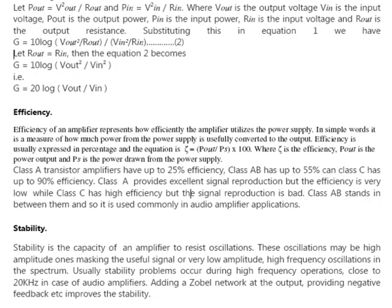Efficiency of an amplifier represents how efficiently the amplifier utilizes the power supply. In simple words, it is a measure of how much power from the power supply is usefully converted to the output. Efficiency is usually expressed in percentage using the equation: η = (P_out / P_s) × 100, where η is the efficiency, P_out is the power output, and P_s is the power drawn from the power supply.